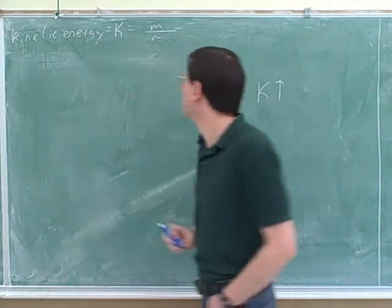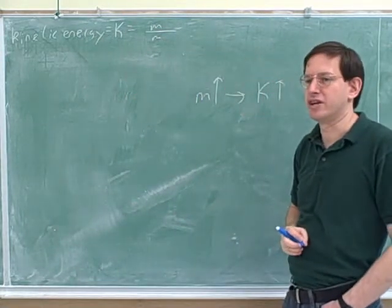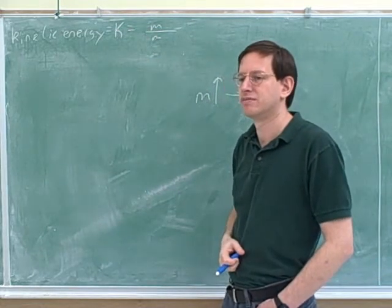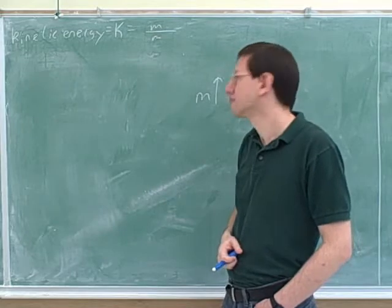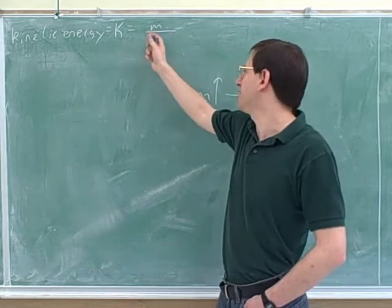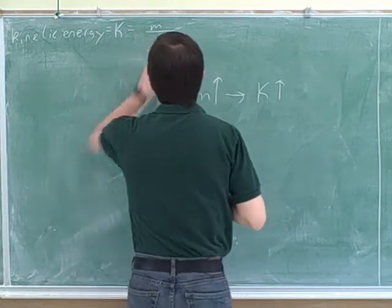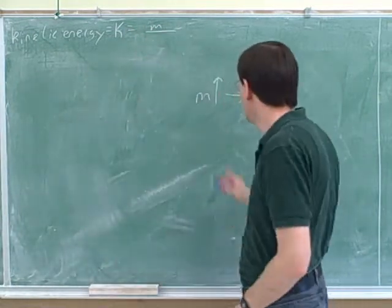So if we're making a formula, should the mass go in the numerator or the denominator here to have a direct relationship with the kinetic energy? Numerator. If we put it in the denominator, then there would be an inverse relationship between mass and kinetic energy. So the mass goes here.